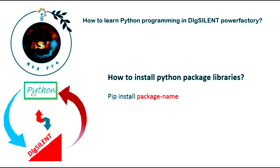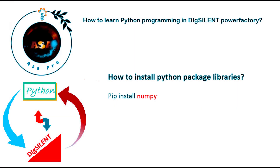Now let us look at how to install these libraries. In a new version of Python, the command pip install package-name can be easily used to install libraries. For example, when you want to install NumPy, just write pip install numpy on your command window and then press Enter. After a few seconds the package will start installing.